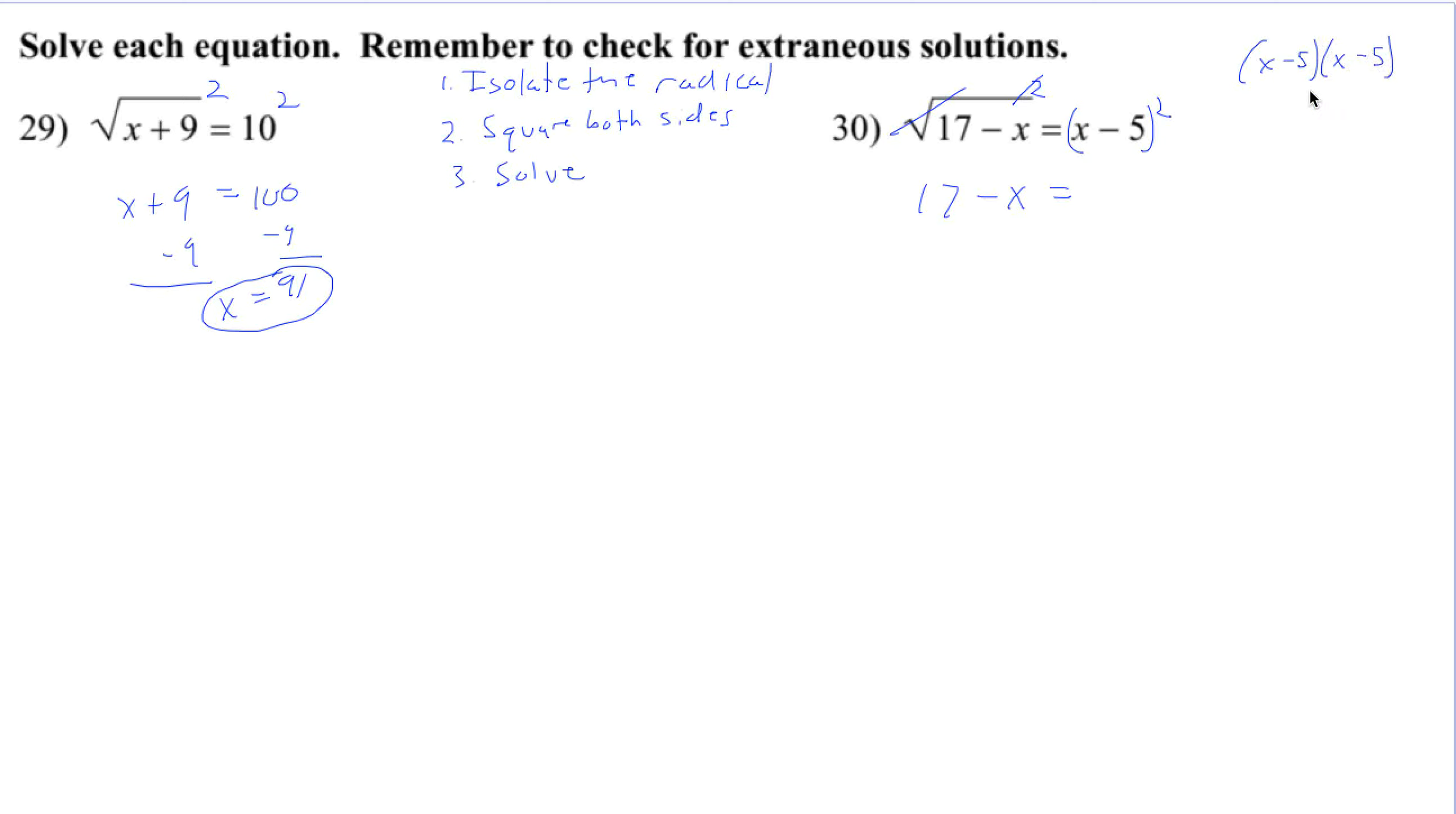There is a special pattern for this, but we can multiply it out. We've got x squared. We've got a negative 5x and then another negative 5x, which is negative 10x. And then negative 5 times negative 5 is 25.